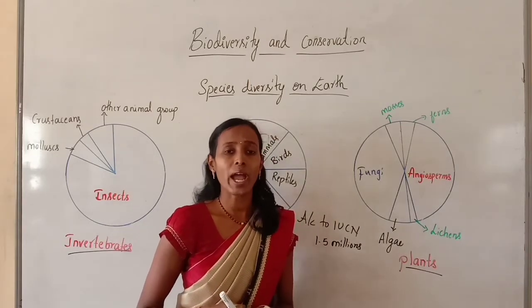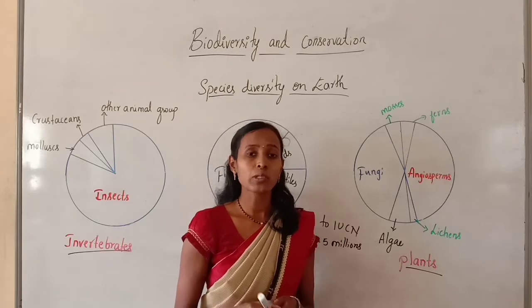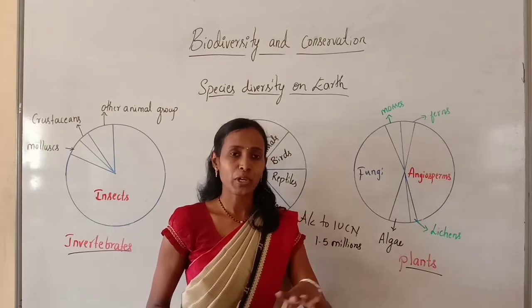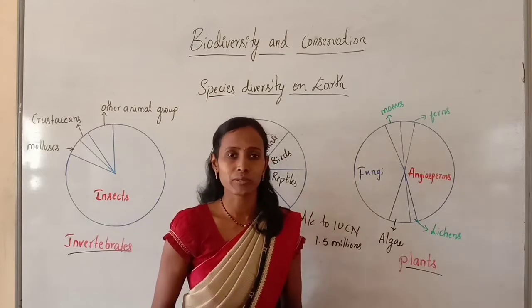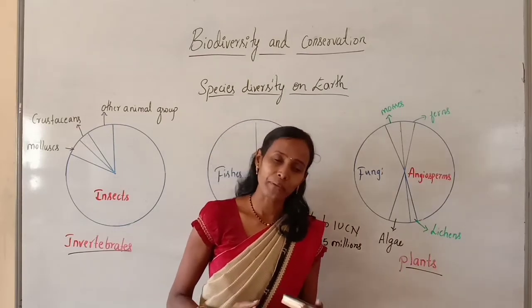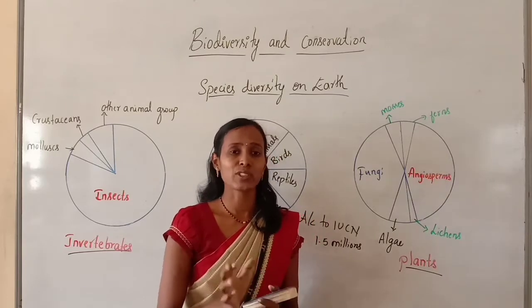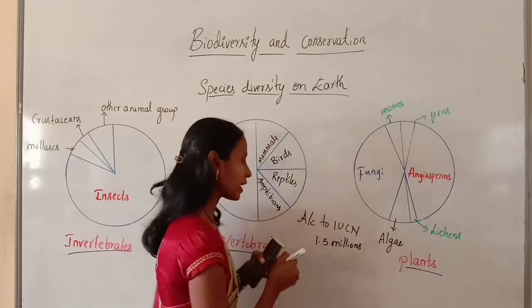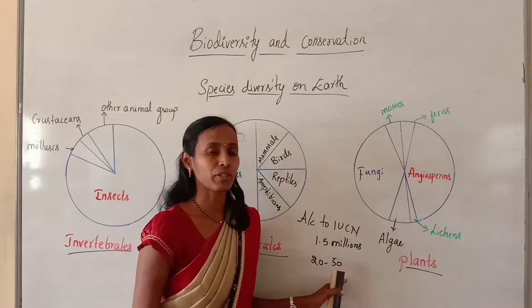We have no idea about how many species are yet to be discovered. There might be about 6 million species waiting to be discovered and described — it is just an estimation. These estimates vary widely and most of them are educated guesses. Certain extreme estimates range from 20 to 50 million.